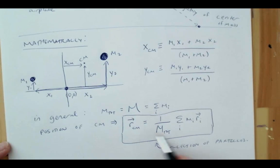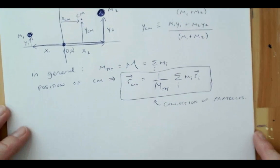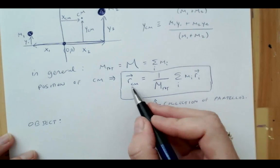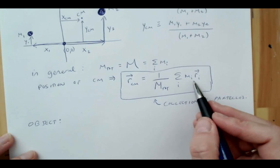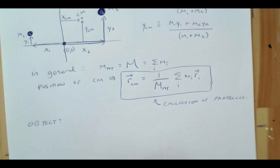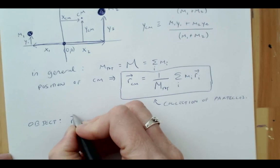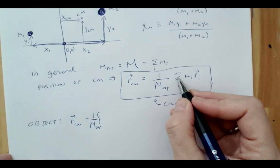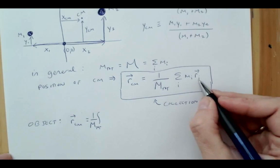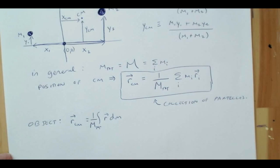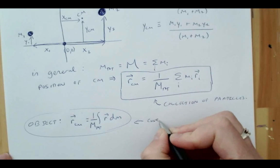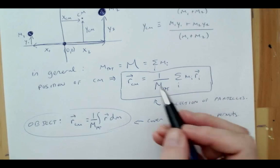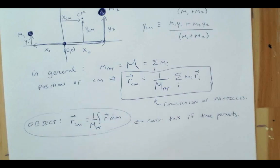This is solved algebraically, and we'll have examples where you apply this equation. If time permits, we'll work on solving it for a continuous object. Based on the ideas of calculus, if you have a sum that becomes continuous, it becomes an integral. So for an object, the position of the center of mass equals 1 divided by the total mass times the integral over the position vector and the small mass increments dm. Conceptually, we can understand that this idea of center of mass easily translates to solid objects.